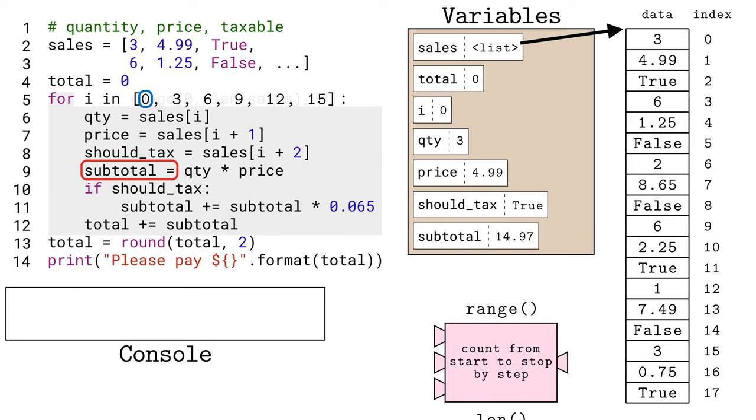Only some of the items should be charged sales tax. To make Python execute code sometimes but not always is the role of this if statement. The condition is simply the should tax variable. If that variable is true, then we'll run the doubly indented line 11, outlined in blue. So we multiply subtotal by .065 to calculate 6.5% tax, and then add it to subtotal using the plus equals operator.